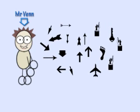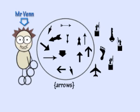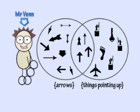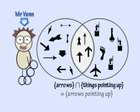Let's use a Venn diagram to find the intersection of the set of arrows and the set of things pointing up. First, draw a circle around the set of arrows. Now draw a circle around the set of things pointing up. The overlap between the circles contains all of the arrows pointing up, or the intersection of the two sets.